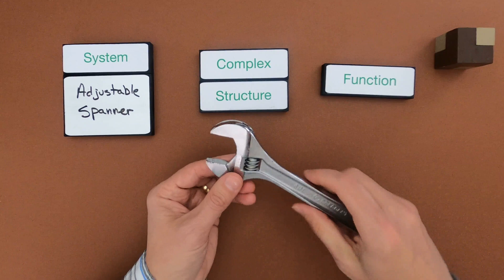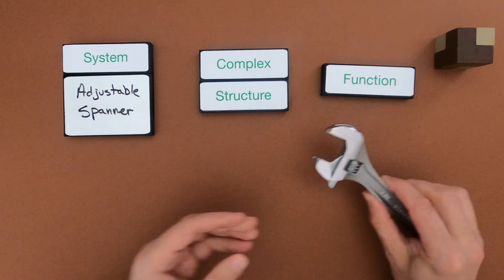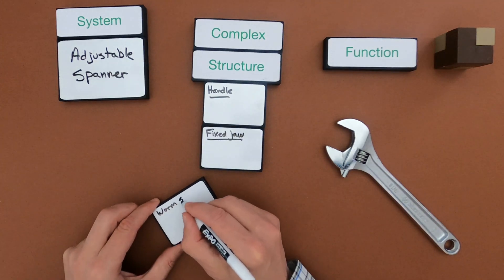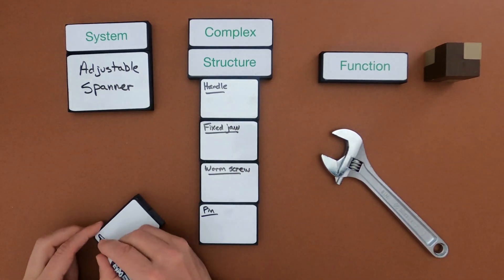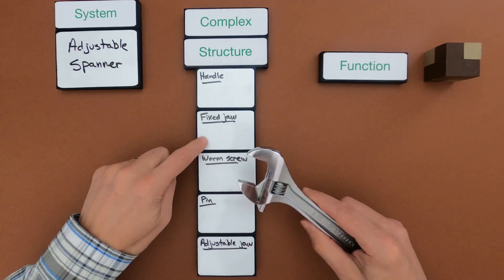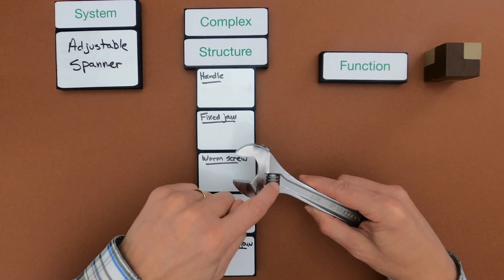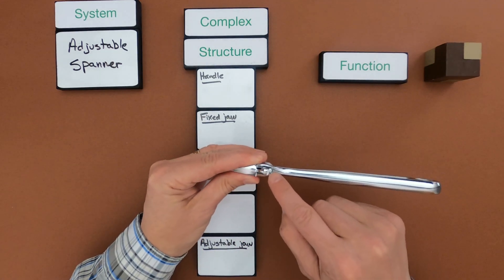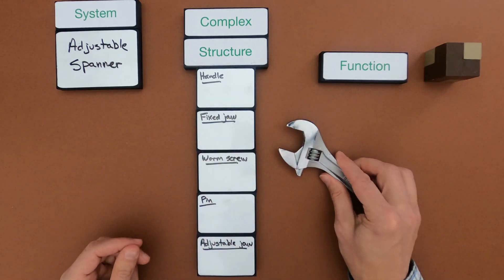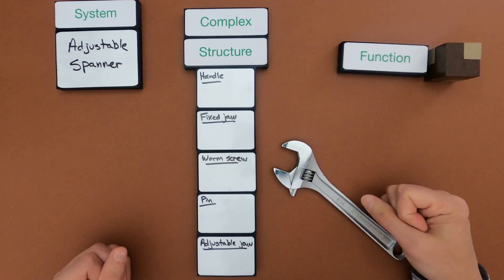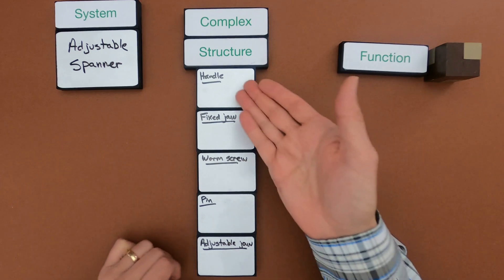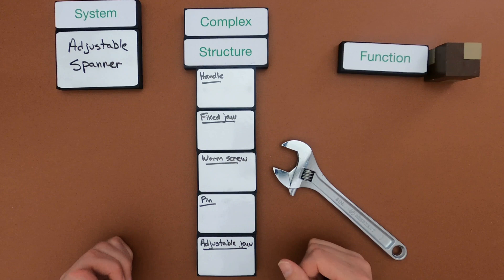To make this easier I'm going to put down all the structures that are an important part of this complex structure. The five structures are: the handle, the fixed jaw which is the top part of the wrench, the worm screw, the pin which is an internal structure holding that worm screw in, and the adjustable jaw at the bottom. Write down how you think all these structures are interconnected and what the relationships are between them. Pause the video, go do that, then come back and I'll show you my thinking.